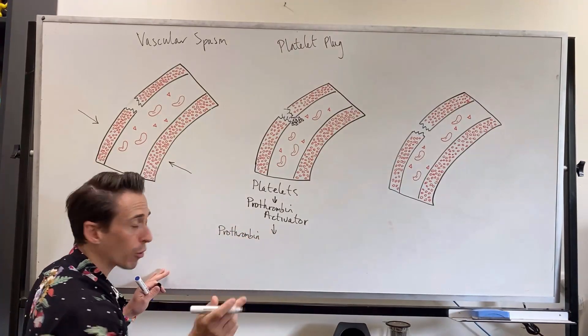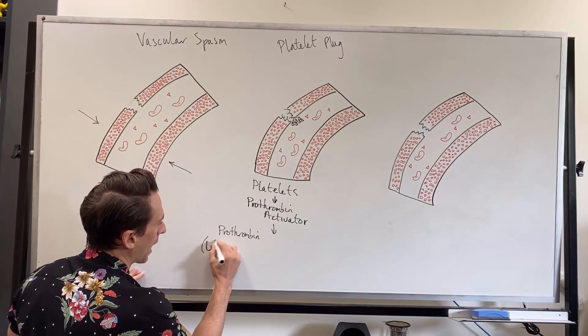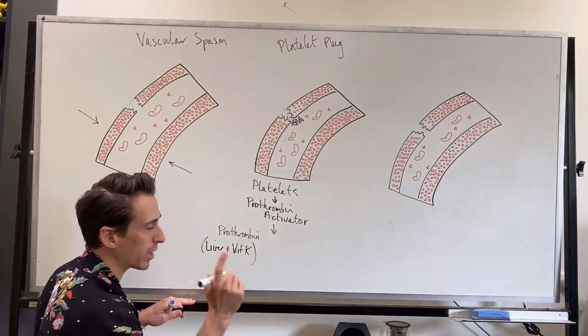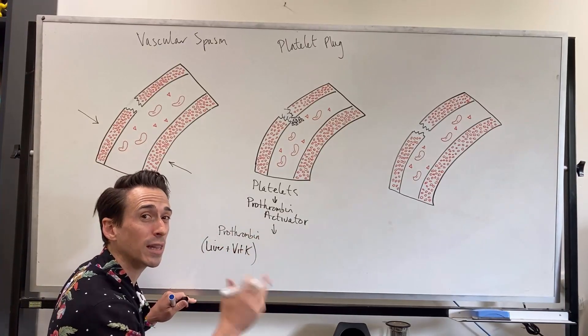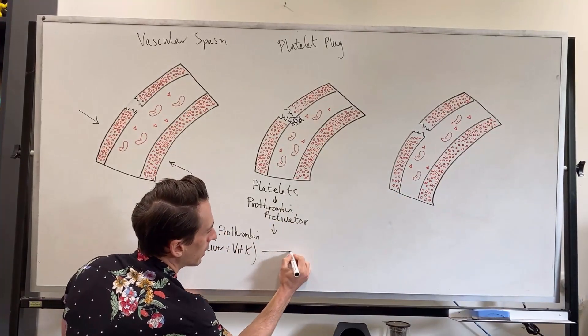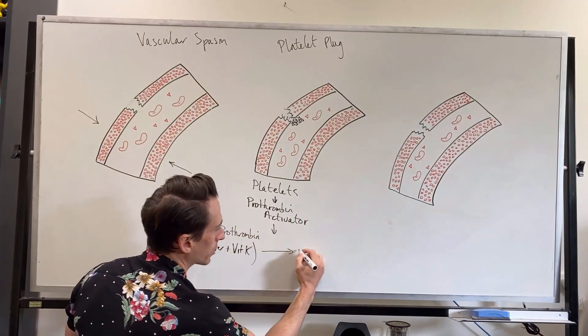And what prothrombin is, is it's something that's produced in the liver and also requires vitamin K. So it's vitamin K dependent for its production. And prothrombin is part of this coagulation phase, which is the next phase. Prothrombin turns into thrombin when prothrombin activator comes across it.